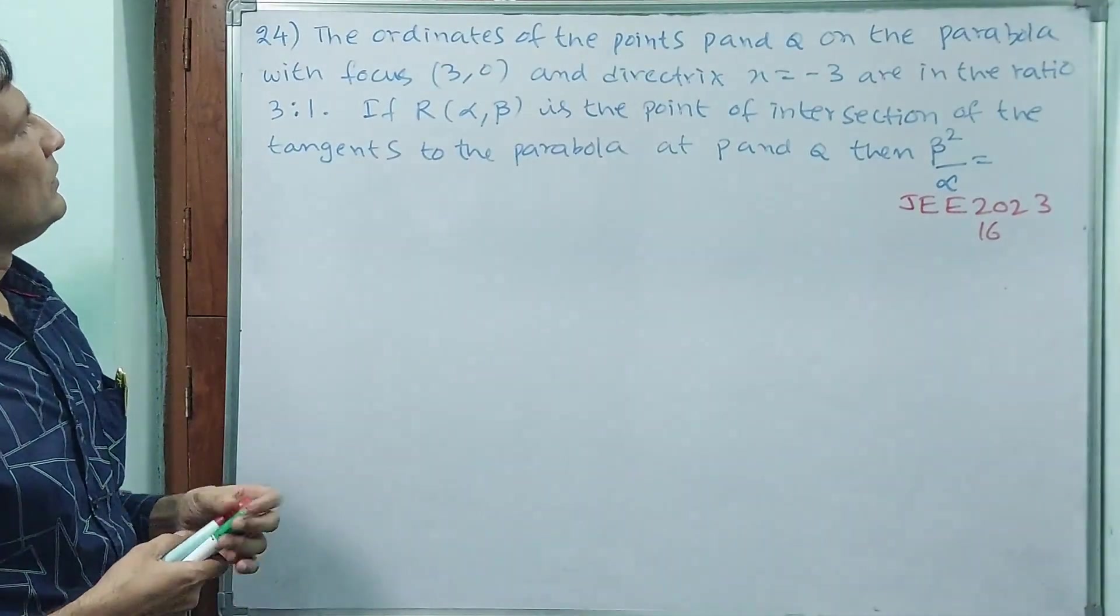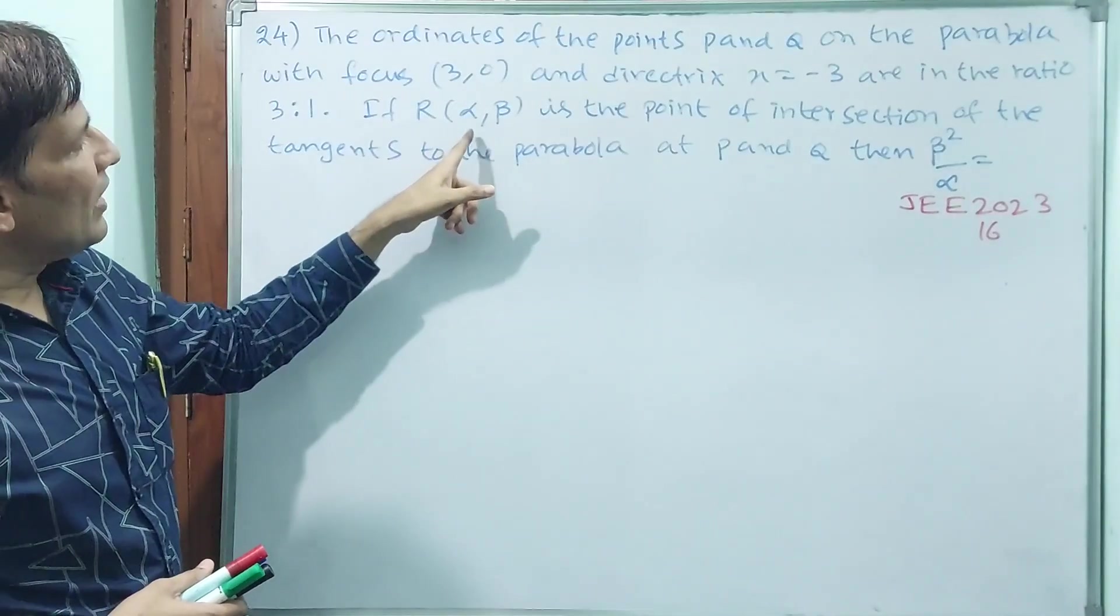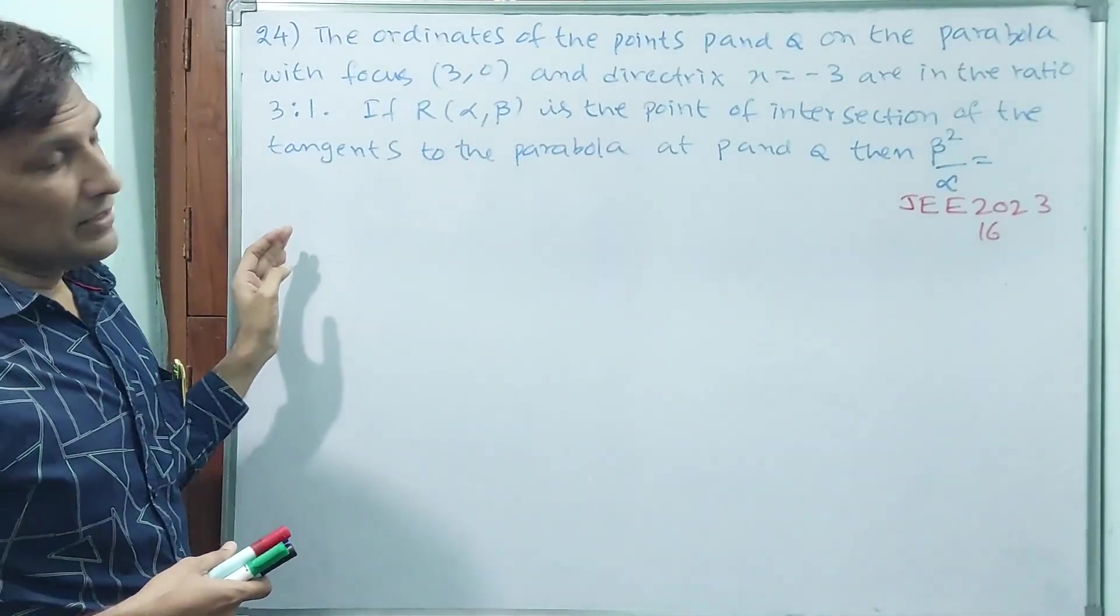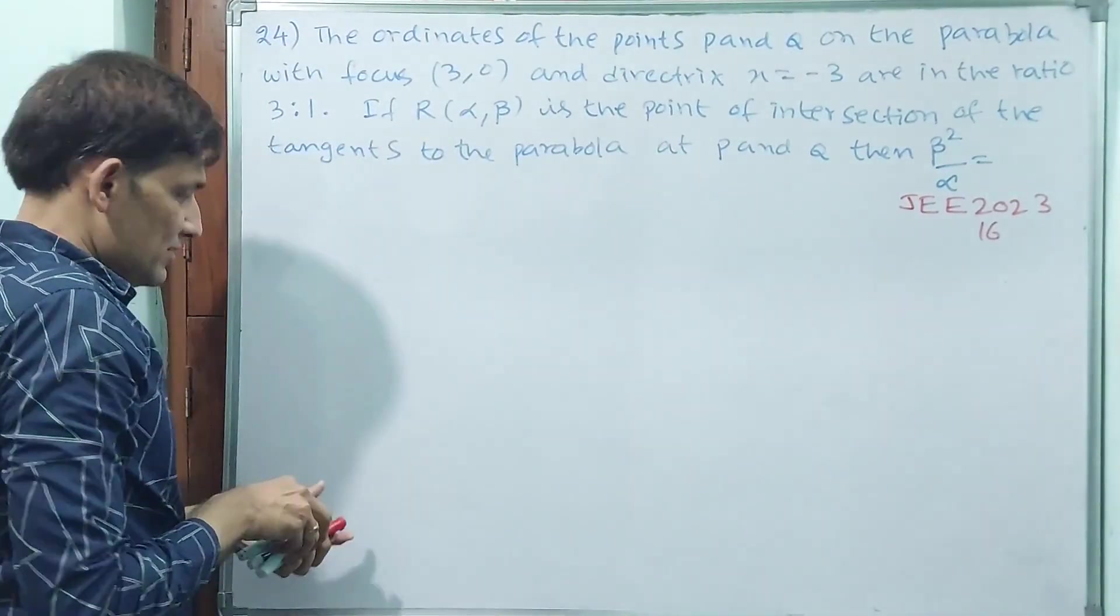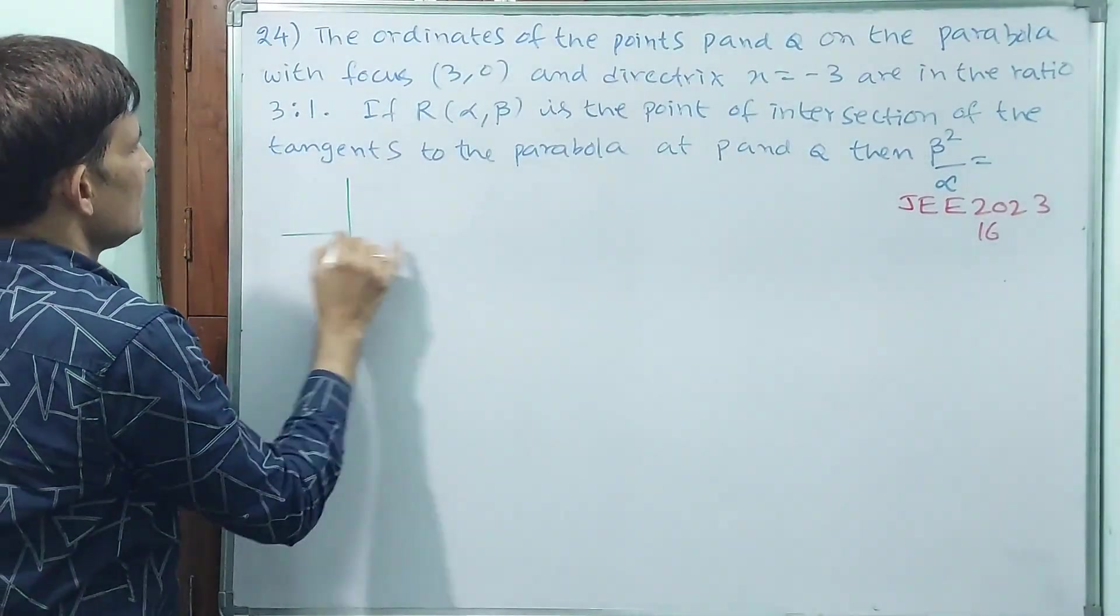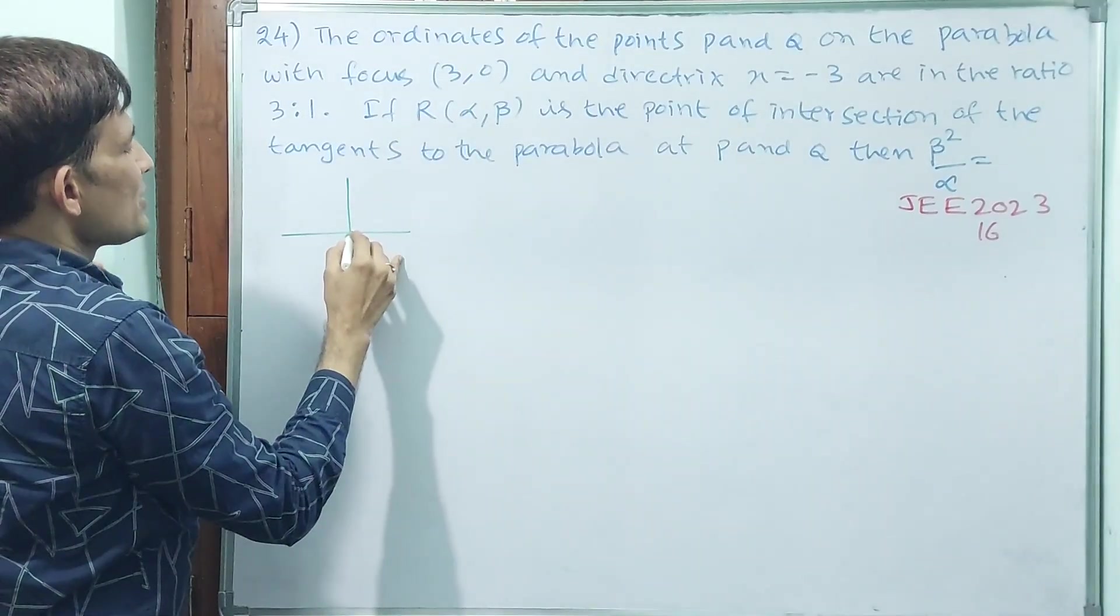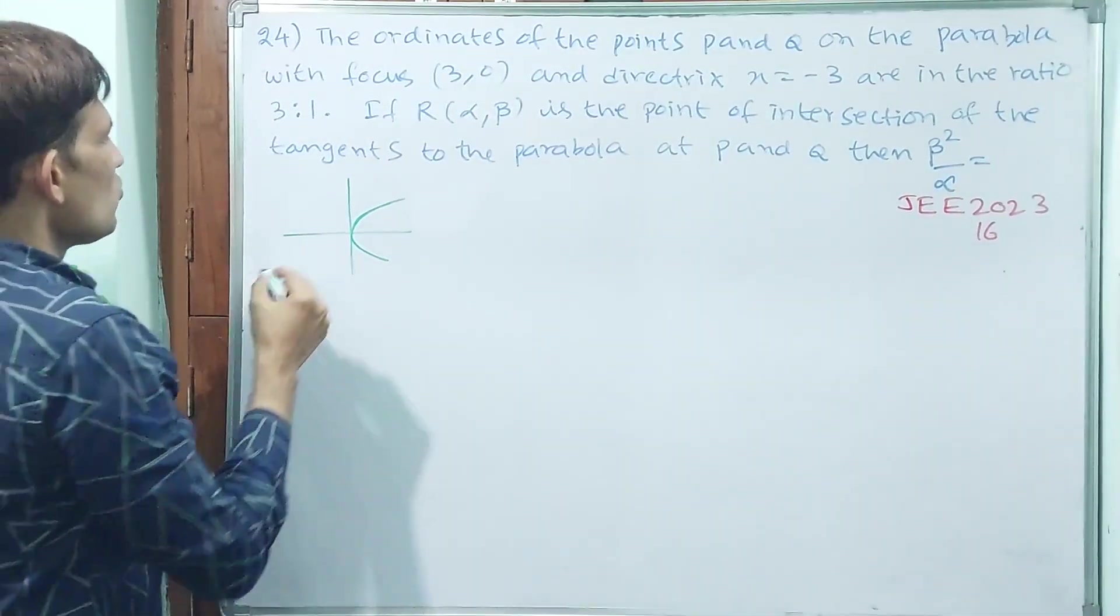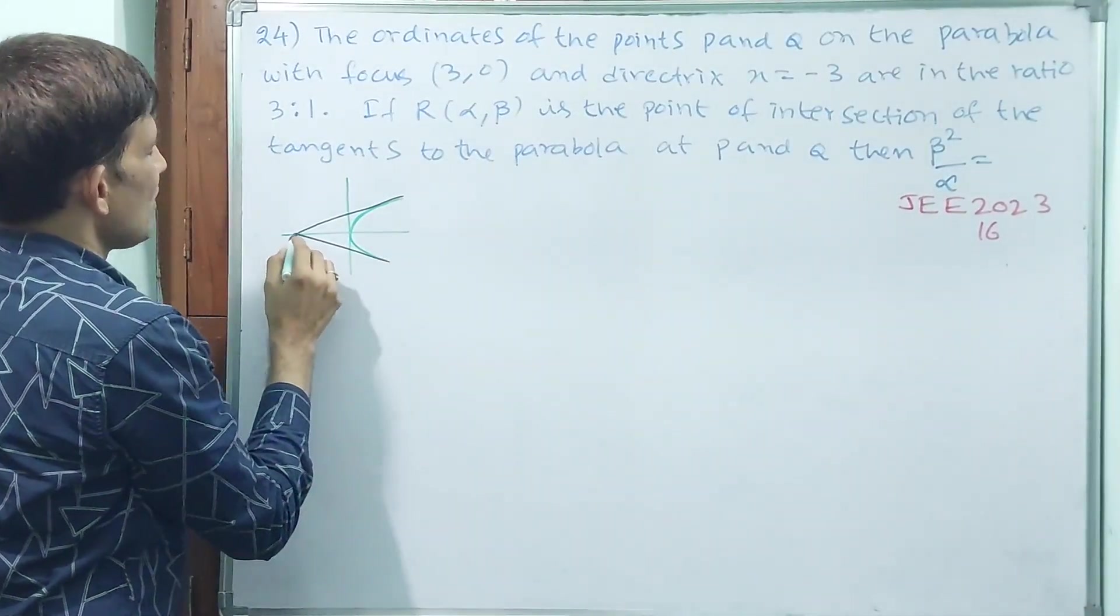Now, if R (alpha, beta) is the point of intersection of the tangents to the parabola, that means from the parabola, two tangents are there and they will meet at one point. I'm drawing approximately, say that (3,0), take this parabola, and two tangents are there like this, and they will meet at one point.